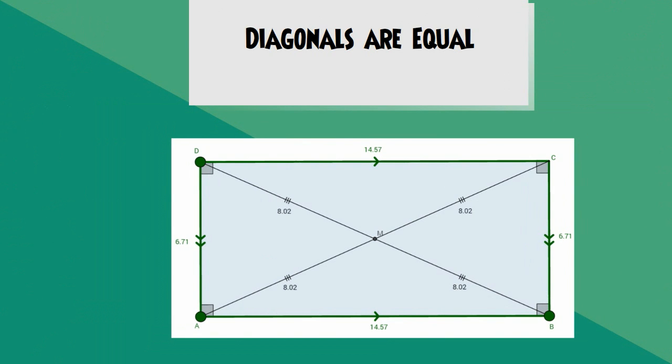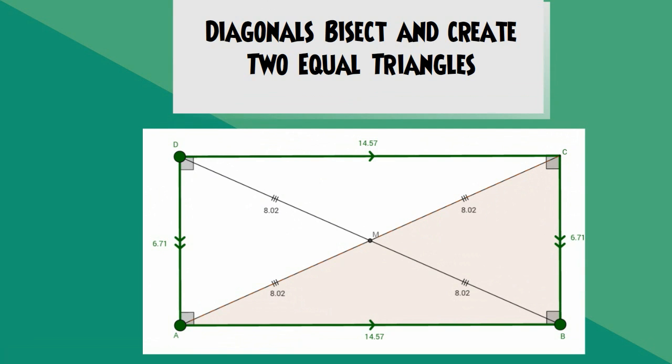Let's talk about the diagonals of a rectangle. The diagonals of a rectangle are of equal length. The diagonals also bisect and create two pairs of equal triangles.